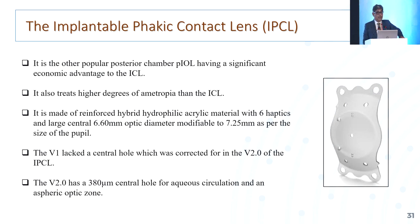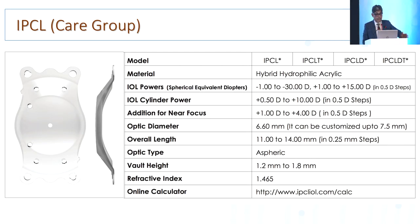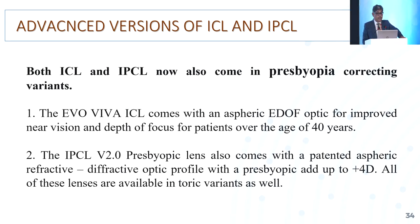The IPCL from CARE Group is equally a good lens, another popular posterior chamber phakic lens. It treats high degrees of ametropia, made of reinforced hybrid hydrophilic acrylic material. It has six haptics and five holes to equalize aqueous—the central hole is 380 microns, with six additional side holes. It has a vault, which is very important to remember. Advanced versions are now available for presbyopia correction: the EVO-Viva ICL based on EDOF principle, now available in India. IPCL also offers a presbyopic lens with a refractive-diffractive optic profile.